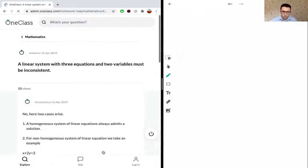This question is asking whether a linear system with three equations and two variables must be inconsistent. We're being asked whether this statement is true or not, so think of it as a true or false question: must a system with three equations and two variables be inconsistent?